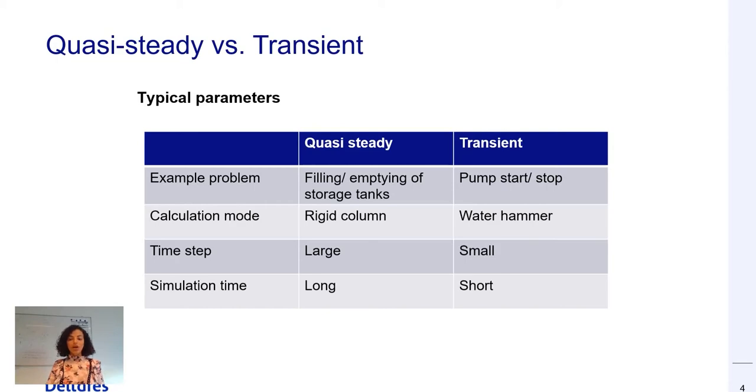For example, filling or emptying of a storage tank is modeled as a quasi-steady phenomena in which change is gradually occurring within the system through reaching and transitioning through numerous equilibrium states.